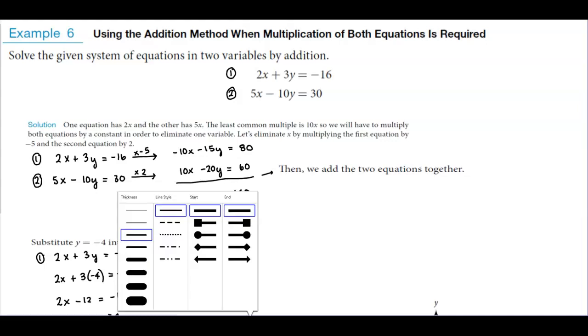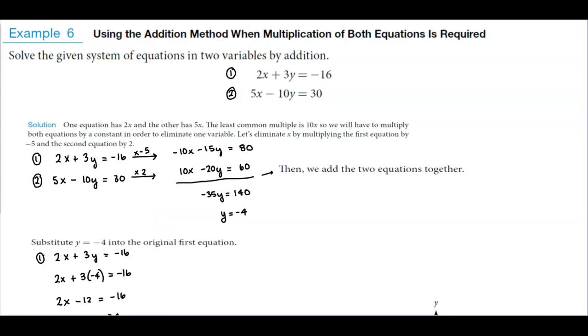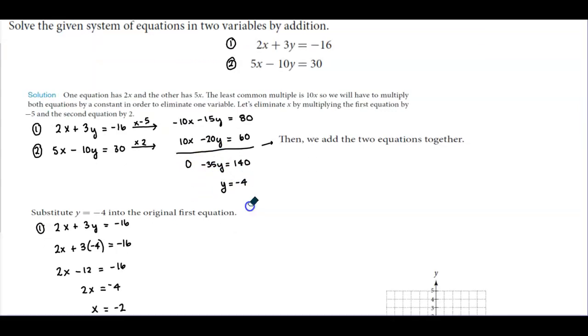The next step is to add the two equations together. When we add negative 10x plus 10x, that gives us 0. So we get 0 minus 35y equals 140. Then we divide both sides by negative 35, and therefore y equals negative 4.